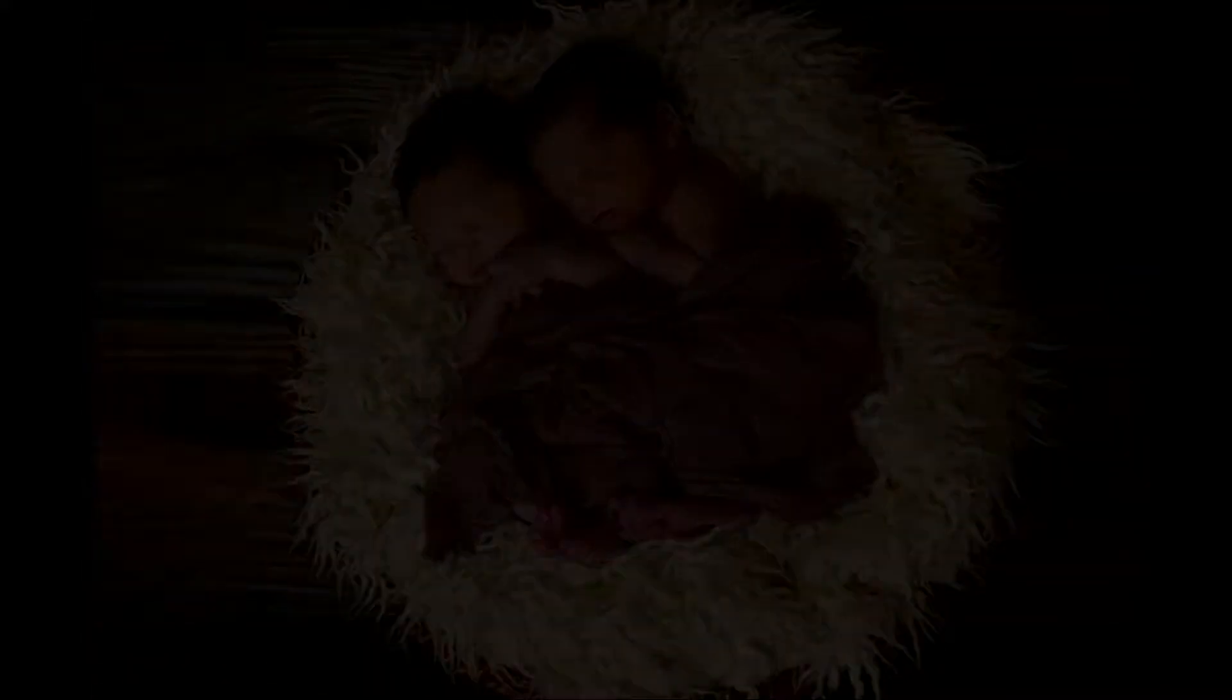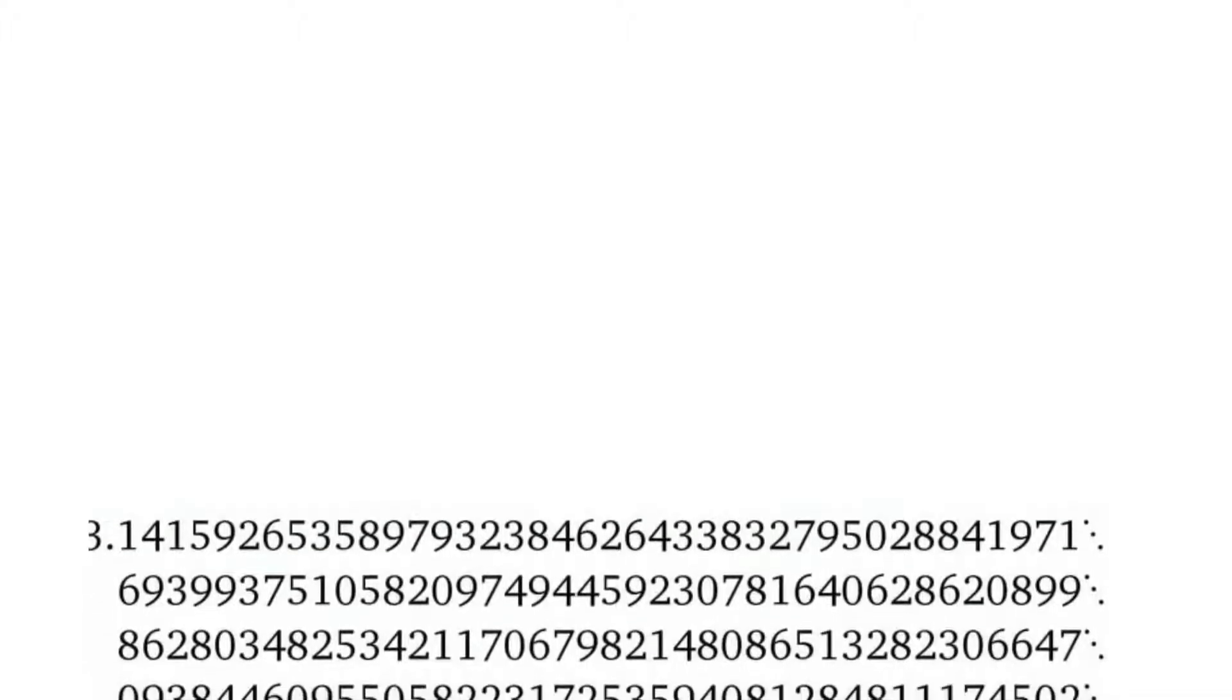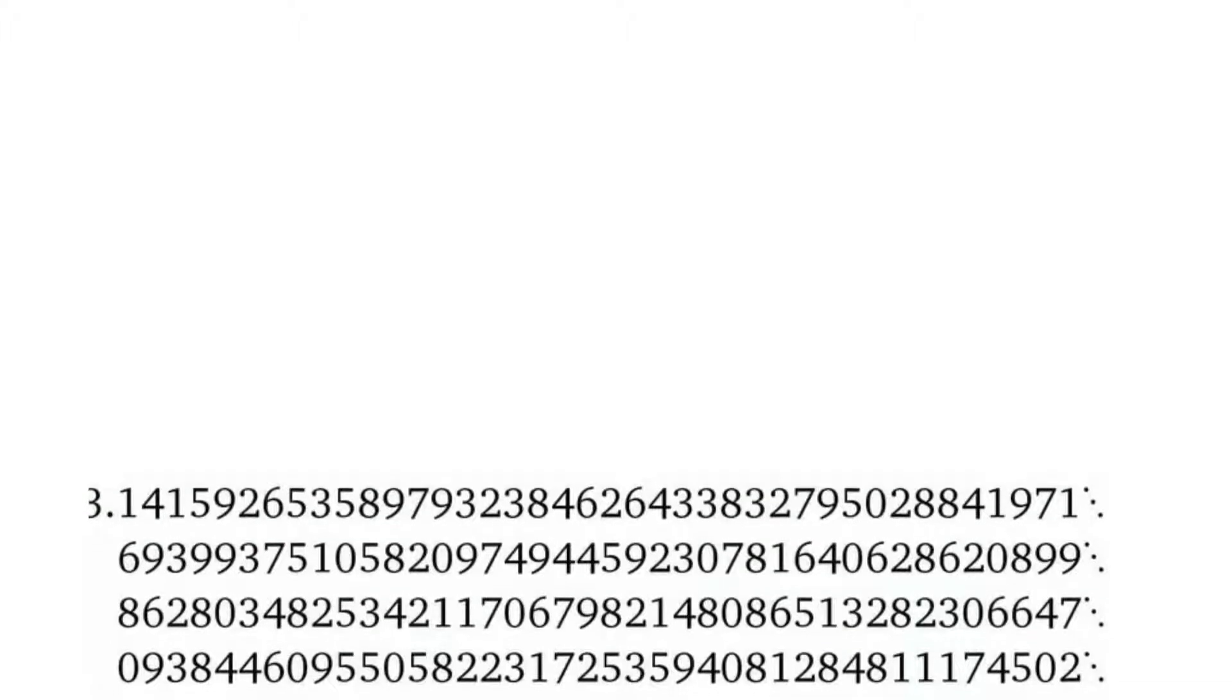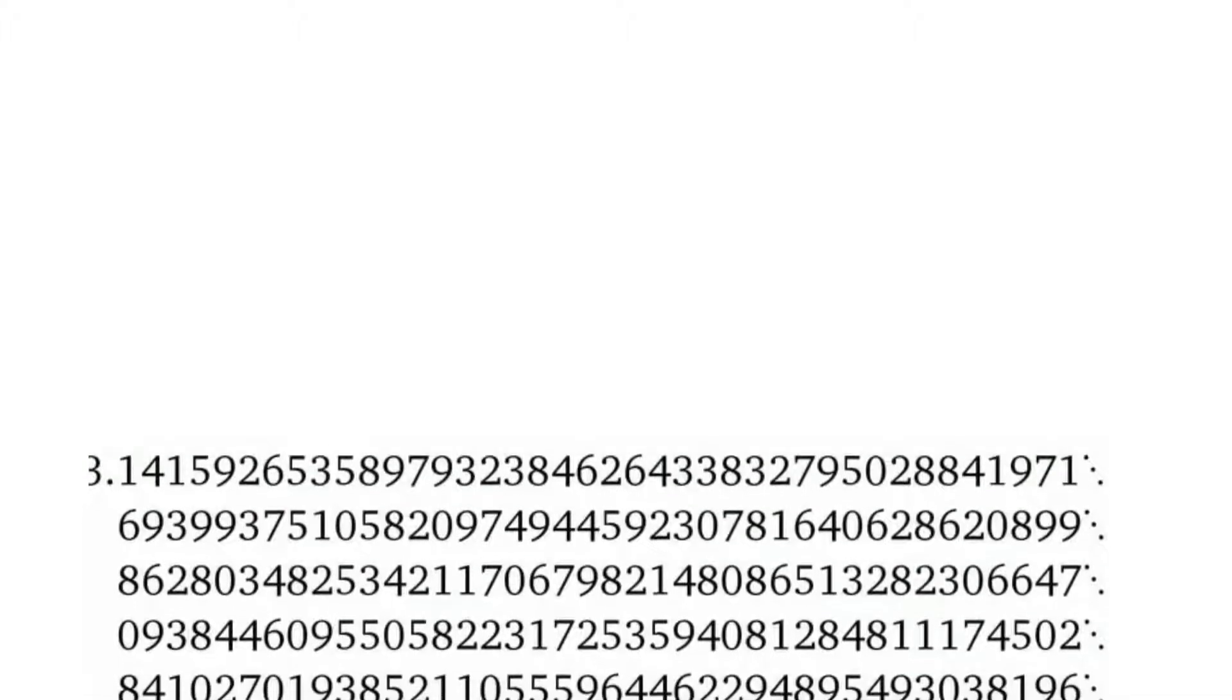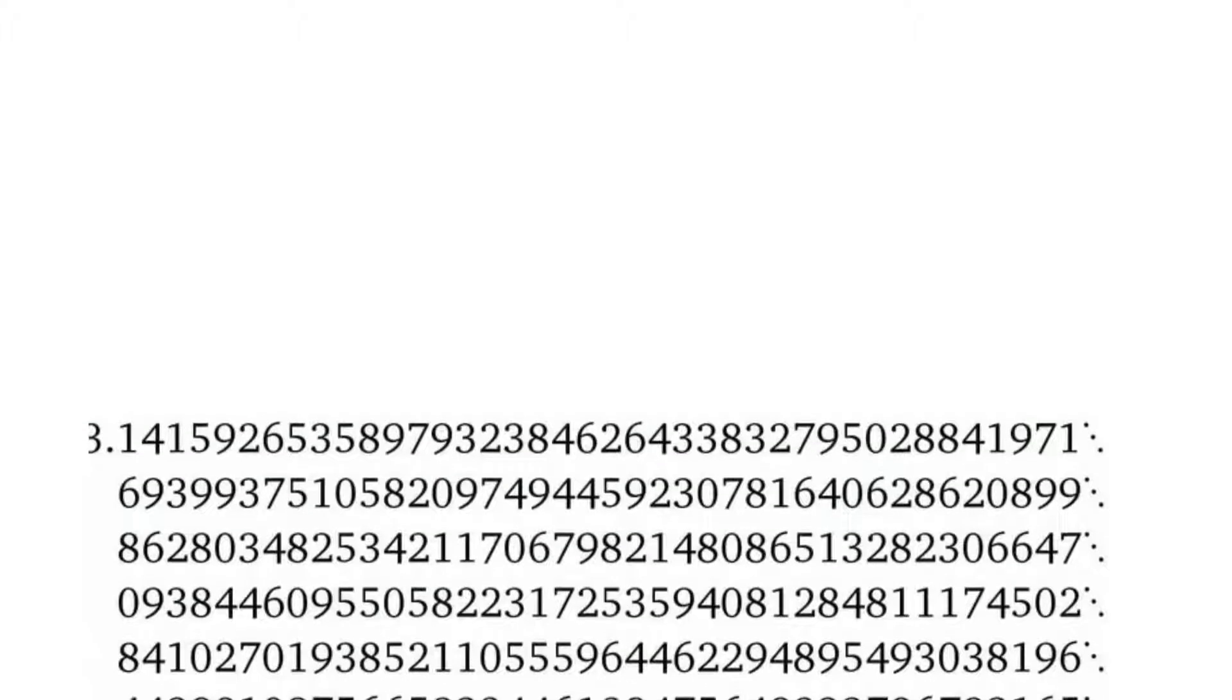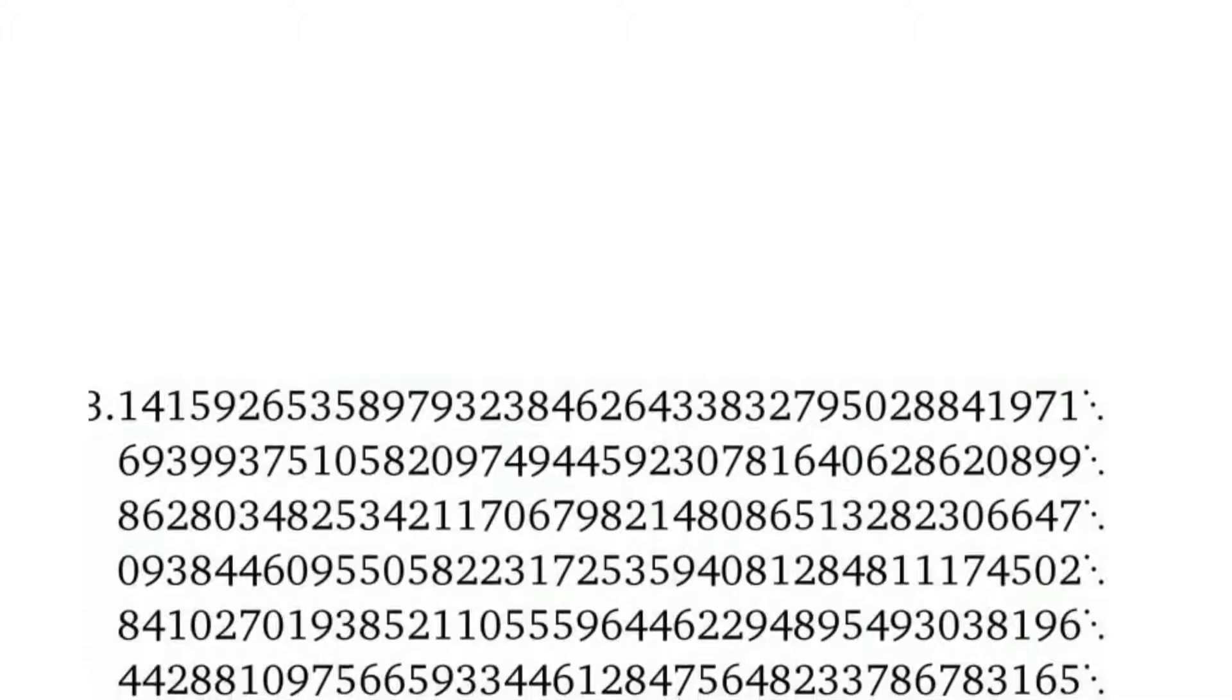Pi equals 3.1415926535 and so on forever. Among pi's infinite digits, you can find any sequence, your zip code, your phone number, encodings of any book, picture or movie. Every finite sequence of digits exists somewhere in pi.